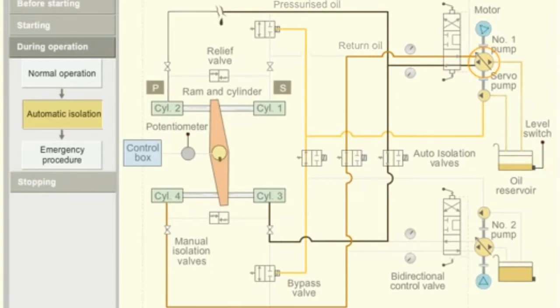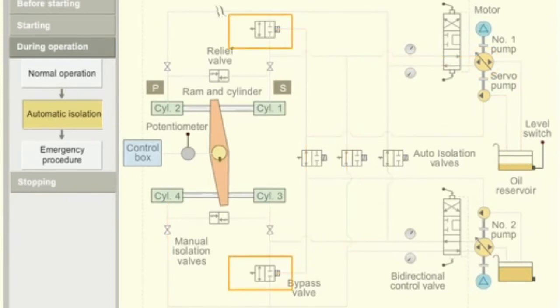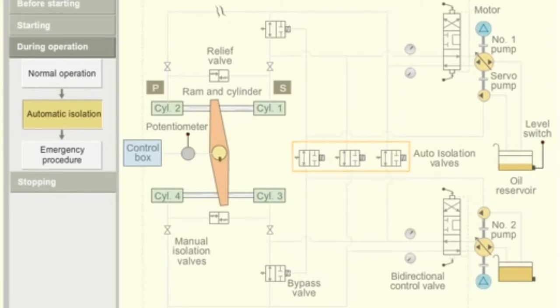As there is no servo pump pressure, bypass valve 1 is open. Electrically operated isolating valves are closed. Number 2 pump starts automatically. Servo pump 2 keeps bypass valve 2 closed.